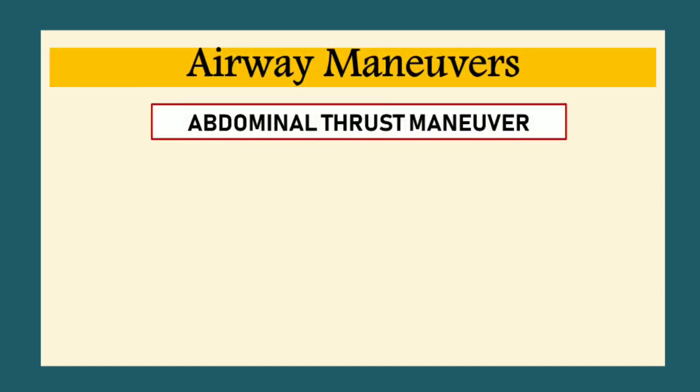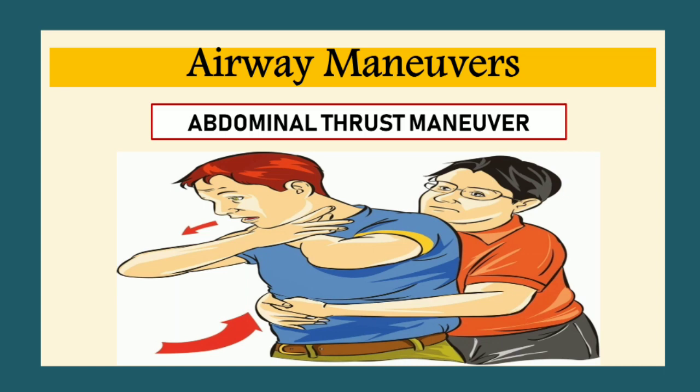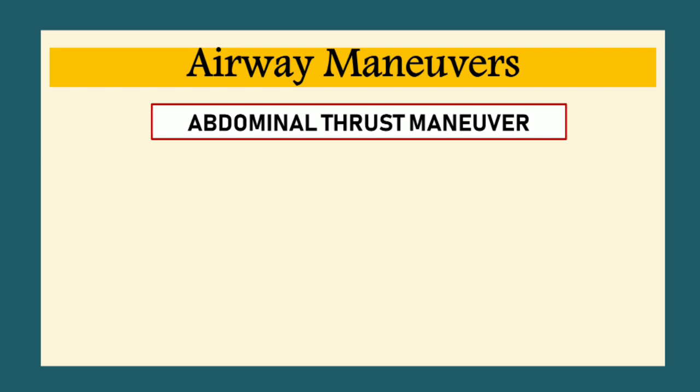The next airway manoeuvre is the abdominal thrust manoeuvre, done when the patient's airway suddenly gets blocked either fully or partly so they can't breathe. Steps: stand behind the person who's choking, place your arms around their waist and bend them forward, clench your fist and place it right above their belly button, put the other hand on top of your fist and pull sharply inward and upward. Repeat up to five times until the airway is cleared.